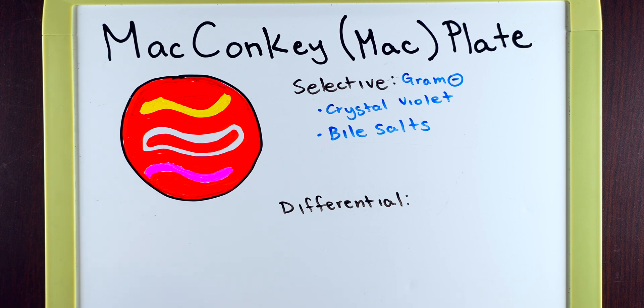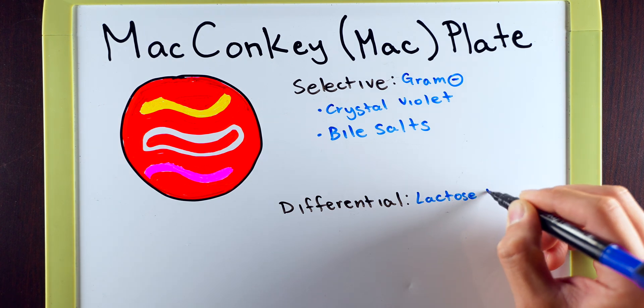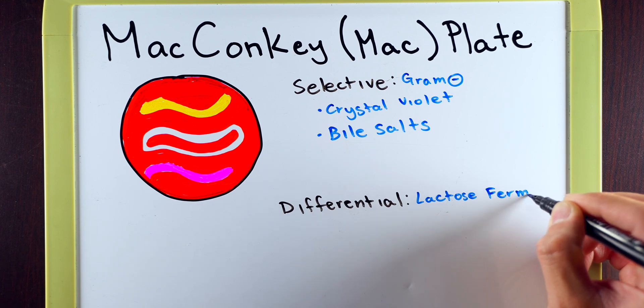The differential portion elaborates a little bit more on the selective portion of the bacteria. The differential means that we know that we already grew gram-negative bacteria, but we want to know some additional information about that bacteria that's growing. And that is, is it a lactose fermenter?